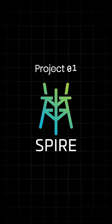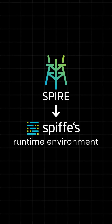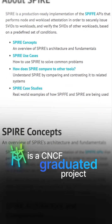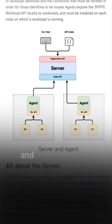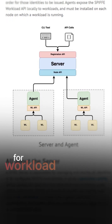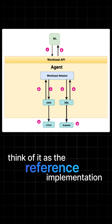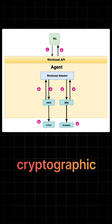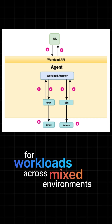Welcome back, Cloud Natives. We're here to talk about Spire, which is actually Spiff's runtime environment. Spire is a CNCF graduated project that basically implements the Spiff specification, and it provides a production-ready system for workload identity management. Think of it as the reference implementation for Spiff that automatically issues and rotates cryptographic identities for workloads across very mixed environments.